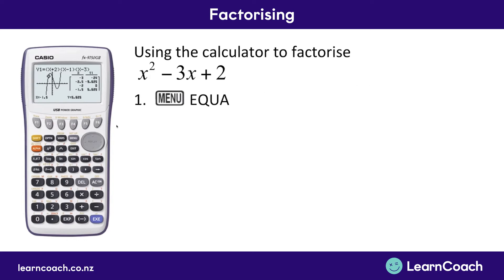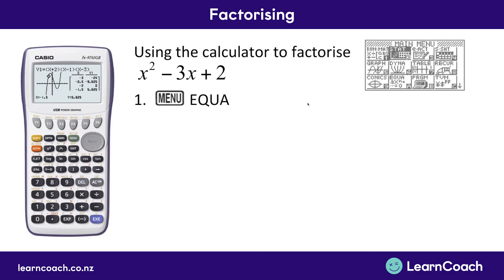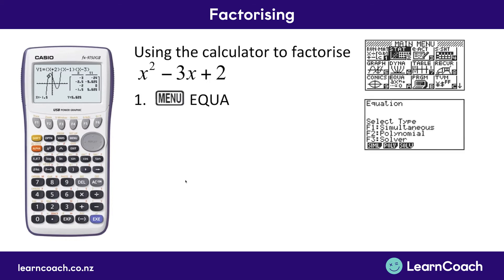Our first step is to press the menu button, which takes us back to the main screen with all options. Once you're in your menu, you'll see a screen something like this. We want to click equation — it'll be in various places depending on your calculator model. Find it and press execute at the bottom. Then it'll come up with an equation screen. Our focus when factorizing and solving is polynomial equations, so press F2.